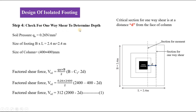The next step is to find the depth of footing based on shear criteria, because in most cases footings fail by shear. The distance d from the column face is taken as the critical section for one-way shear. The factored shear force is given by: VU1 = Qu × B × (B/2 − C1/2 − D), where Qu is 0.26 N/mm², B is 2.4 m, C1 is 400 mm, and D is the depth to be found. Substituting and simplifying gives Equation 1.